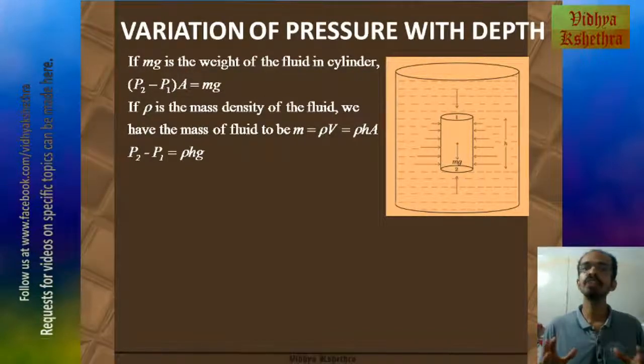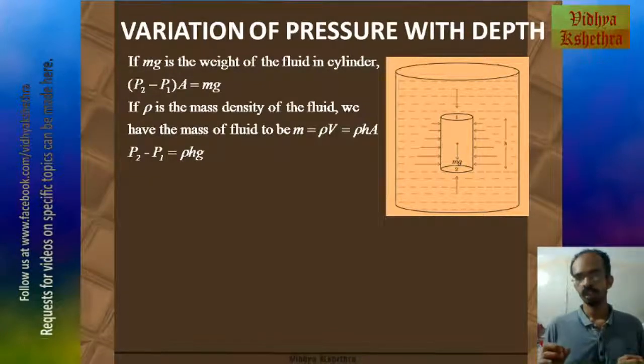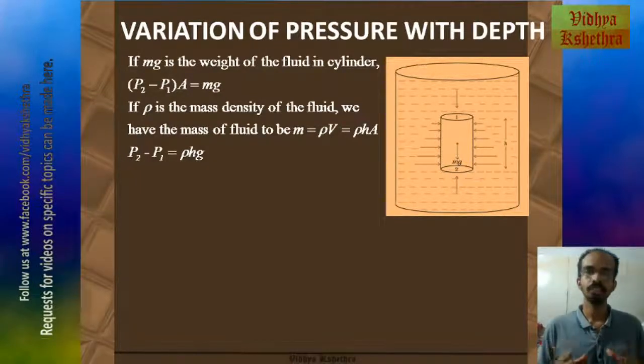If rho is the mass density of the fluid, we have mass of the fluid to be M equals rho V. Or V, which is the volume, equals height of the cylinder into area of the cross-section. So we get the equation as P2 minus P1 equals rho Hg. The variable A, which is the area of the cross-section, gets cancelled out.